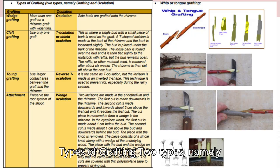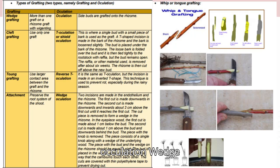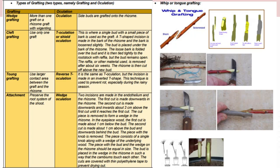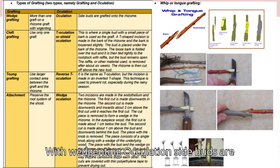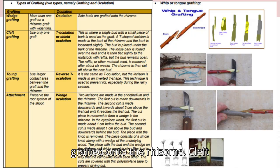Types of grafting — two types: grafting and oculation. Wedge grafting allows more than one graft on a rootstock, with widgeting. Oculation: side buds are grafted onto the rootstock.